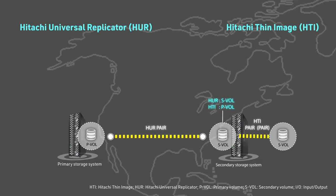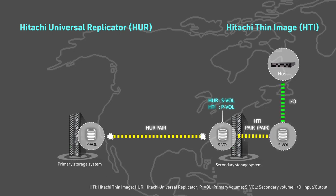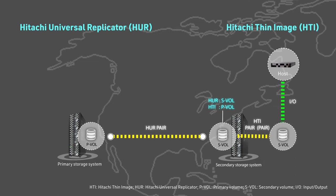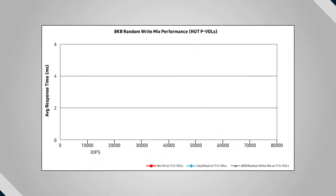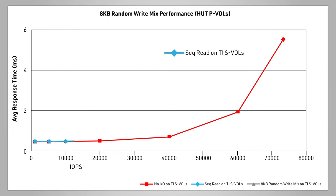Now let's look at performance. In this shared volume configuration, there is no impact on the host I/O performance of the Universal Replicator PVOL when Read and Write I/Os are executed on the Thin Image SVOL. This graph shows the response times when Read and Write I/Os are applied to Thin Image SVOLs. As you can see, the host I/O performance of the Universal Replicator PVOLs is not affected.